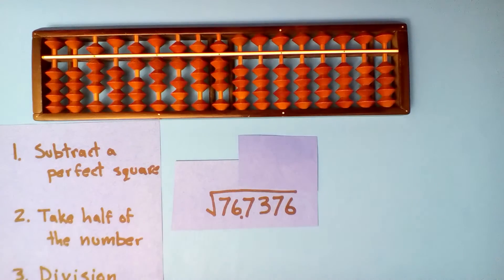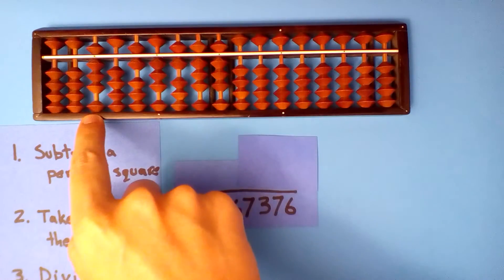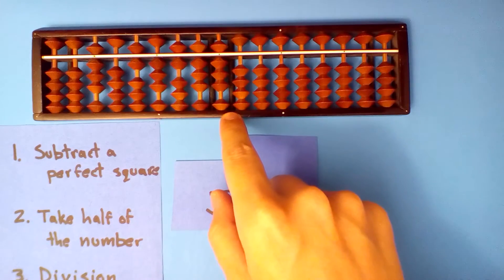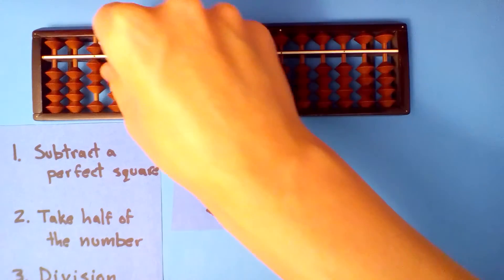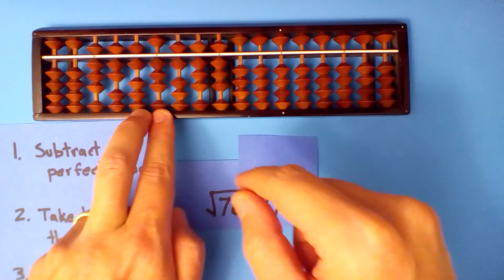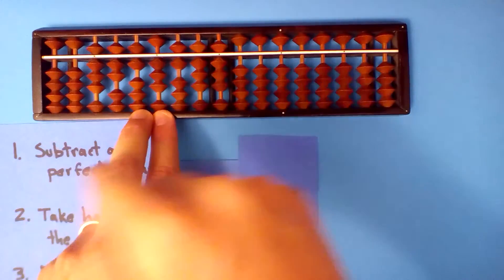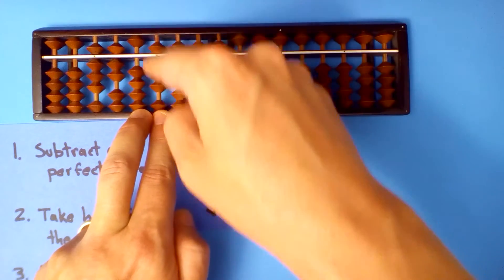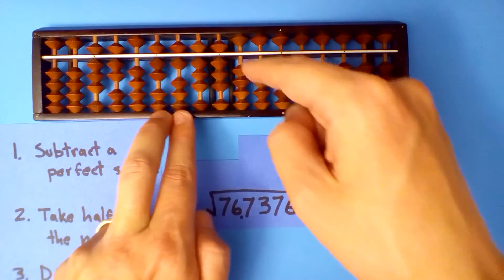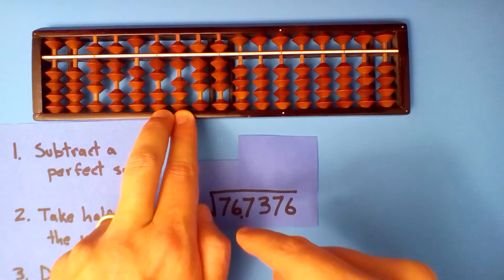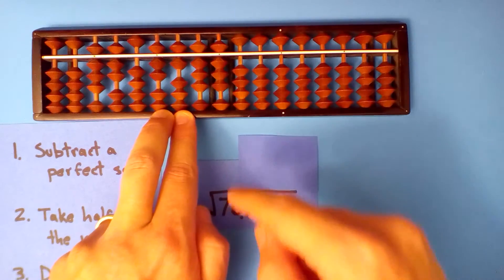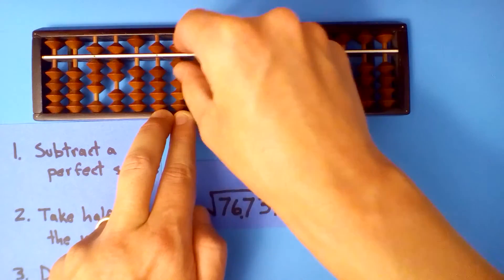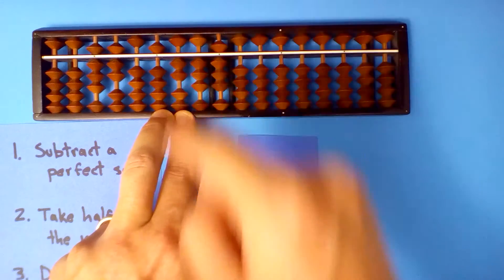And we divide. How many times does this number go into this one? Seven times. Multiply and subtract: seven times eight is fifty-six. Seven times itself is forty-nine, and half of that is twenty-four point five.